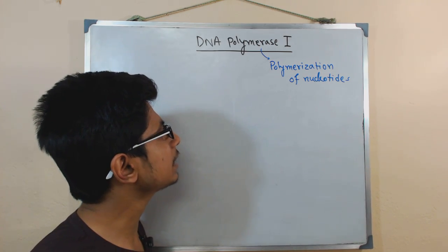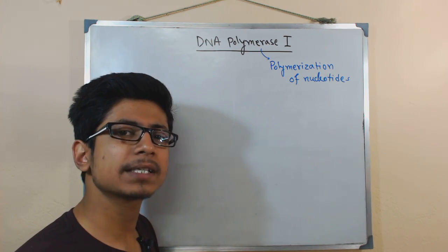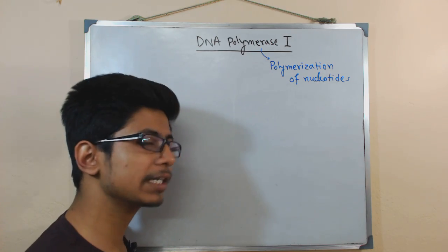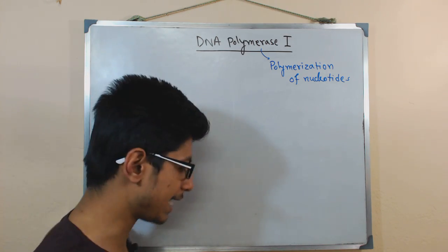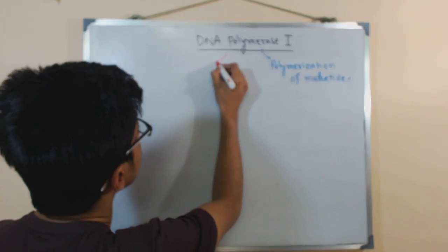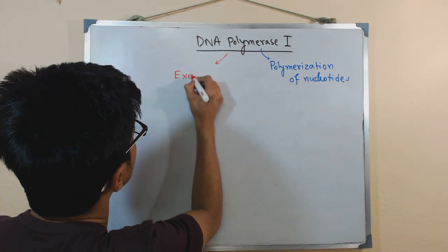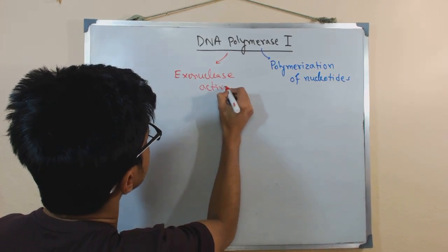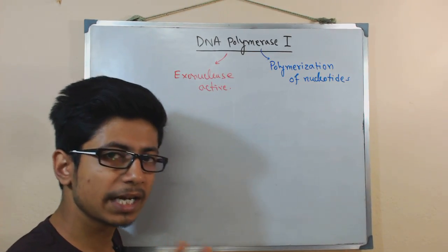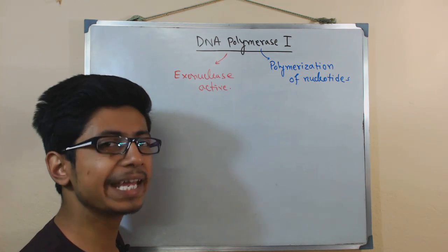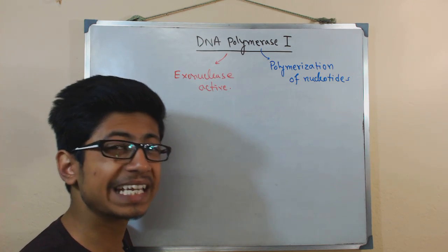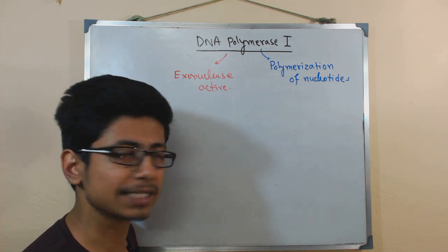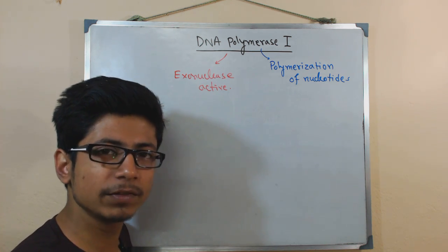Once different scientists started working with DNA Polymerase I and tried to understand its function, it was found out that it is not only polymerizing — it has some additional functions. One of those functions is called exonuclease activity. Exonuclease activity means cutting from the outer side; a nuclease is an enzyme which will cleave nucleic acids.